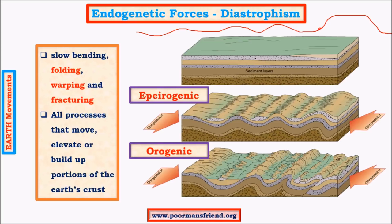Epirogenic movements involve folding, warping, and fracturing but being larger in scale are not clearly visible to the human eye. Orogenic movements, on the other hand, are very perceptible — for example, the Himalayan mountains can be identified from even a few kilometers away. This is because orogenic movements take place within a very small region; the Himalayas are only about 100 to 400 kilometers in width, even though their length may extend for thousands of kilometers.